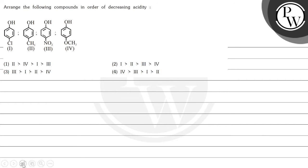Hello Bacho, let's read this question. The question says, arrange the following compounds in order of decreasing acidity. So here, four compounds are given and we have to find out the acidity order.